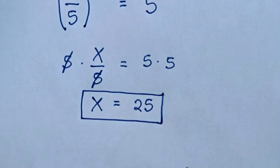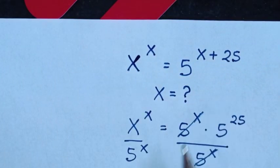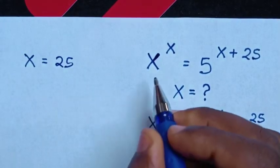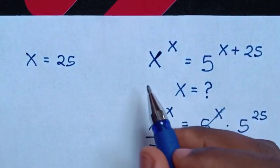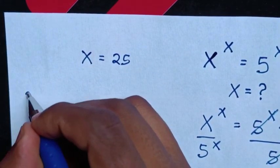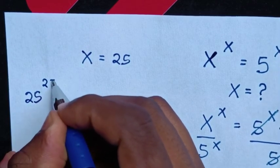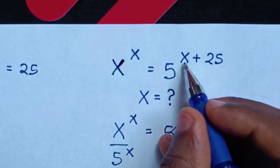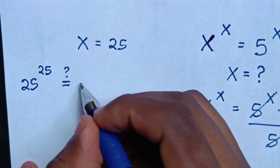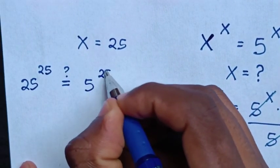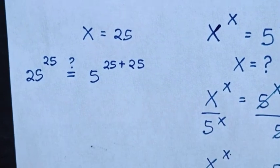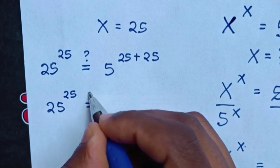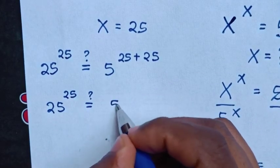Therefore x equals 25 is the correct answer. Now to check if this value of x is correct, from our problem we substitute x equal to 25. So it will be 25 power of 25 is equal to 5 power of 25 plus 25, so 5 power of 50.